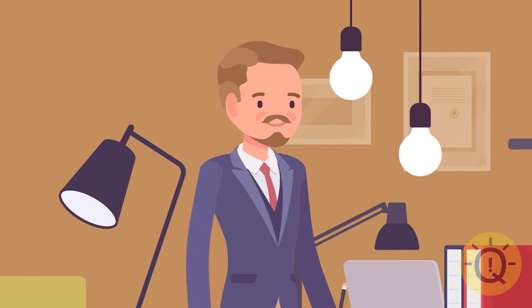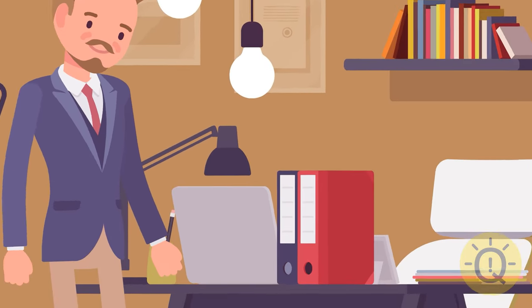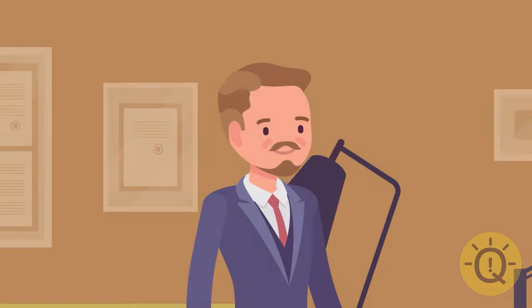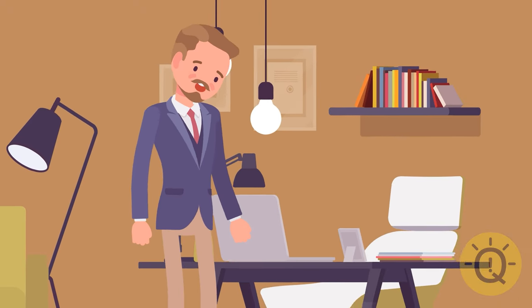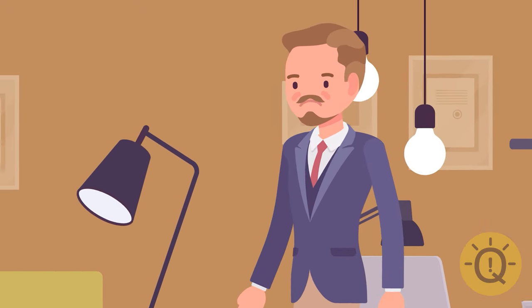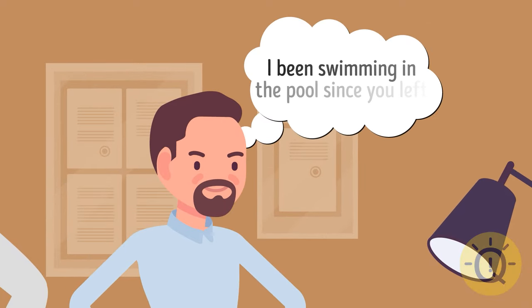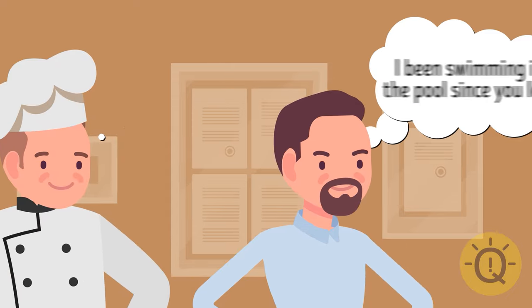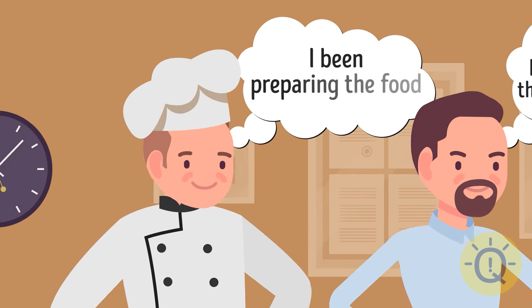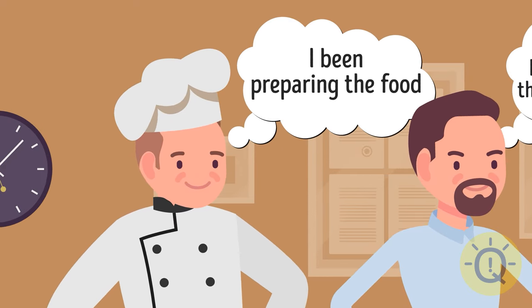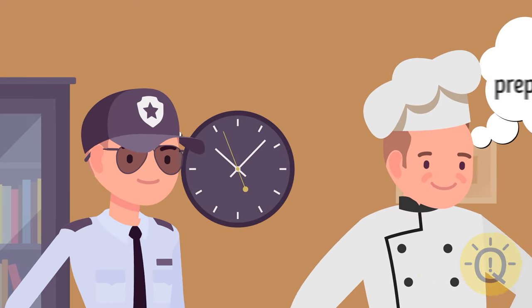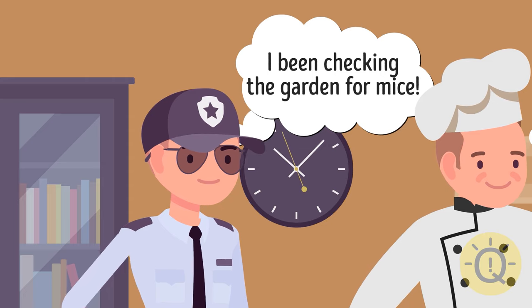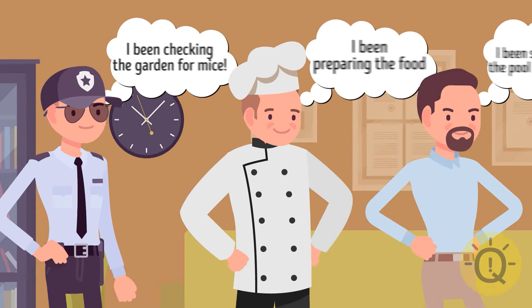James left a folder with important documents on the table in his home office and went to a business meeting. When he returned he found out that the documents had disappeared. James had three suspects. His brother said I've been swimming in the pool since you left. I haven't seen or heard anything. The cook replied tomorrow we're having a party. I've been preparing the food. The security guard told James I've been outside all this time checking the garden for mice. Who knows where the documents are? It's the security guard. His job description doesn't include pest control.